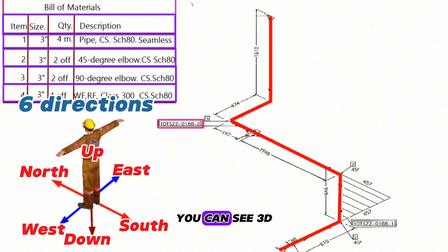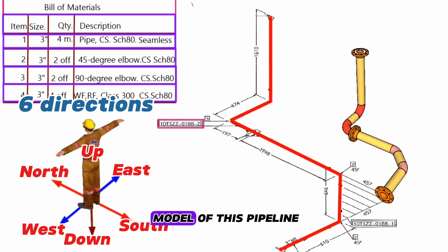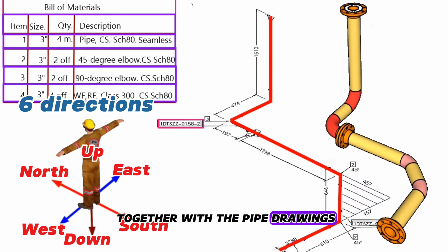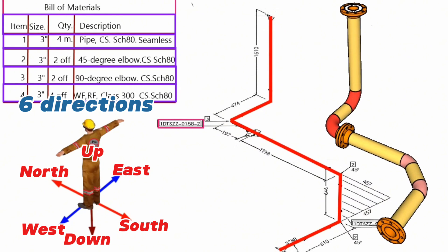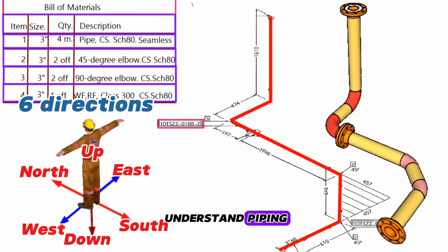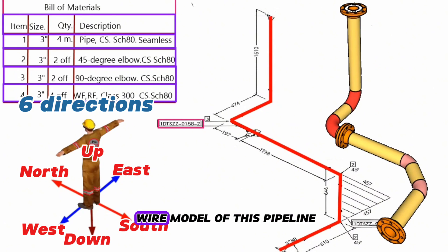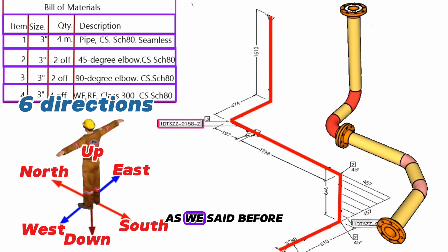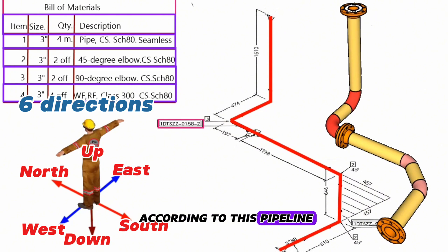You can also see the 3D model of this pipeline together with the pipe drawings. This 3D model helps you easily read and understand the piping isometric drawing. Now let's prepare the wire model of this pipeline — in other words, let's bend the wire according to this pipeline.